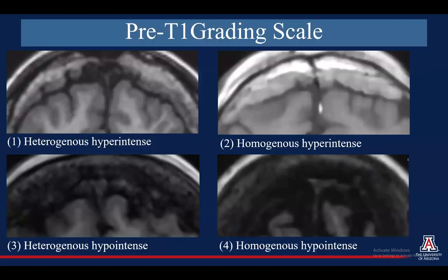This is an example of our grading system for the pre-T1 images. We used a subjective scale as well as a quantitative measurement of the signal intensities. Our subjective scale for the pre-T1 images includes: heterogeneously hyperintense, homogeneously hyperintense, heterogeneously hypointense, and homogeneously hypointense.